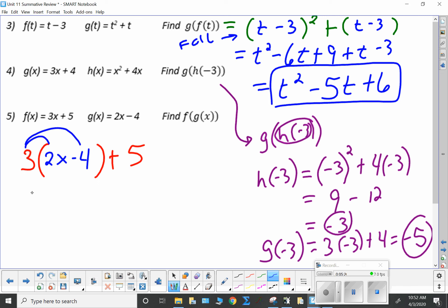2x minus 4. Now, I have to distribute the 3. And I'm going to get 6x minus 12 plus 5. This is going to be 6x minus 7. That's it.